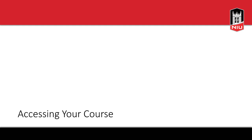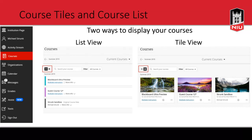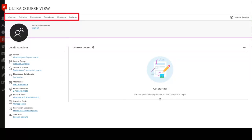We're going to start with accessing your course. On the base navigation, to get to your list of courses, click the Courses tab. You have two views you can switch between by clicking the icon in the upper left to switch between list or tile view. The list view has the added bonus of color coding where Ultra courses have a colored bar next to them and original courses have a gray bar. To access your course, you'll click one of the courses on the list or one of the tiles, and that will open you into the new Ultra course view.